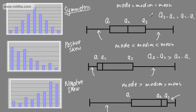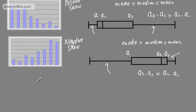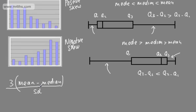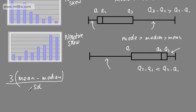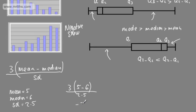These features can just be stated — you don't have to prove them, but they are certainly ways to test skewness. We can also calculate skewness numerically. One formula is: three times the mean minus the median, divided by the standard deviation. For example, say we have a mean of 5, a median of 6, and a standard deviation of 2.5. That gives us three times (5 minus 6) over 2.5, which is minus 3 over 2.5, giving minus 1.2.